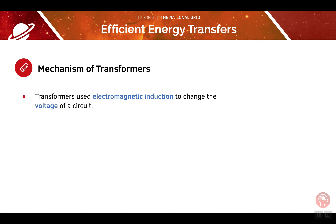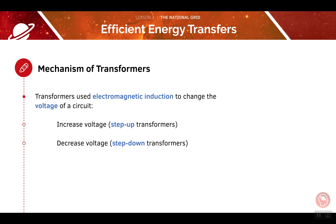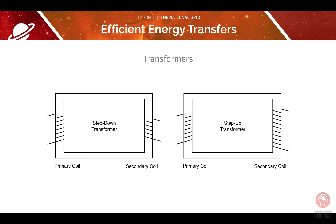Later in this section on magnetism, we will learn that a changing electric current can induce a magnetic field and vice versa. This principle is called electromagnetic induction. Transformers use electromagnetic induction to change the voltage of a circuit. Coils of wire are wrapped around an iron core linking two coils. If an alternating current passes through the first coil of wire, a changing magnetic field will be produced. If you place a second coil of wire nearby, the changing magnetic field will induce a new alternating current in this second coil.